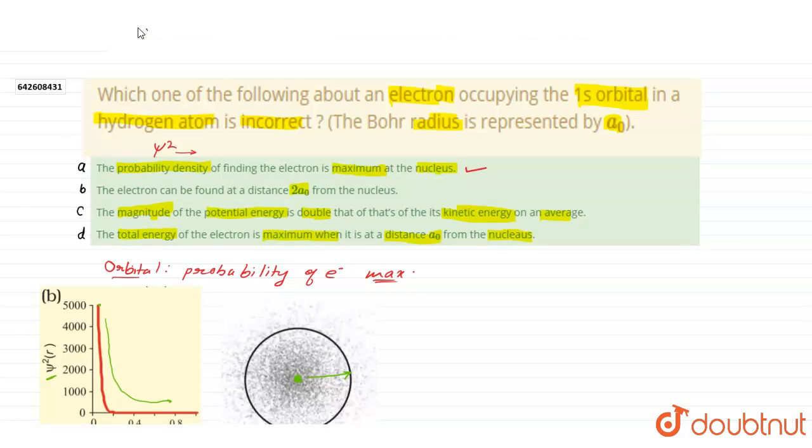And we have to find incorrect statement. Then check the second statement, the electron can be found at a distance 2A0 from the nucleus. Yes, it is also correct, because electron can be found at all distances around the nucleus.